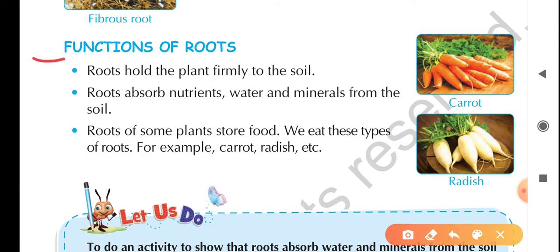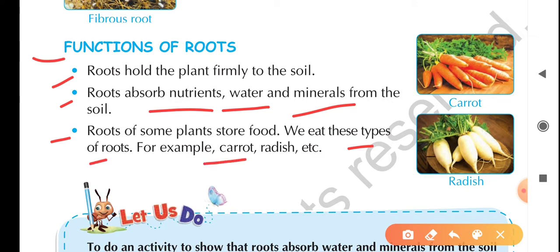Next are the functions of roots. Roots hold the plant firmly to the soil — they keep the plant standing upright and provide it stability. Second, roots absorb nutrients, water, and minerals from the soil, and transport them through the stem, branches, and up to the leaves.